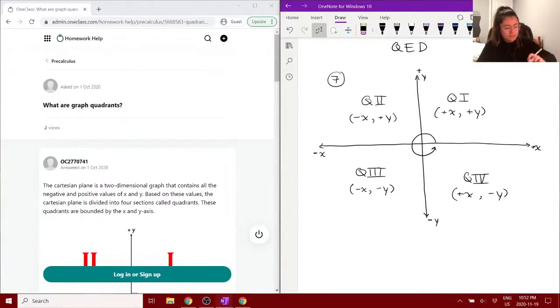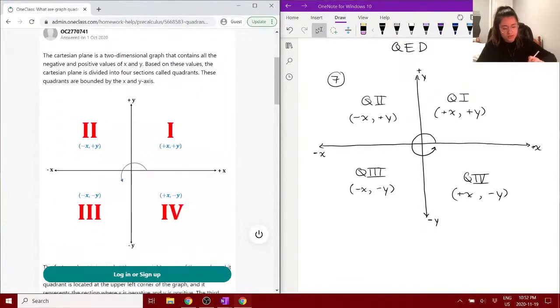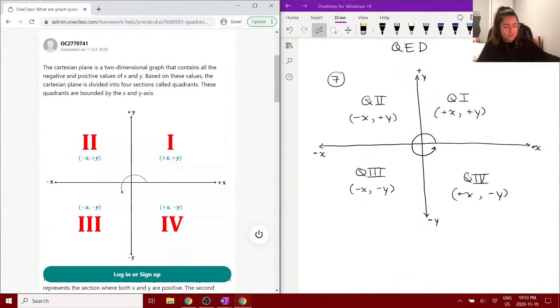So, let's look through the solution, because there's also an example we can go through. So, in the Cartesian plane, it's a two-dimensional graph that contains all negative and positive values of x and y, so based on these values, we can divide the Cartesian plane into four different sections called quadrants. And they are bounded by the x and y axis.